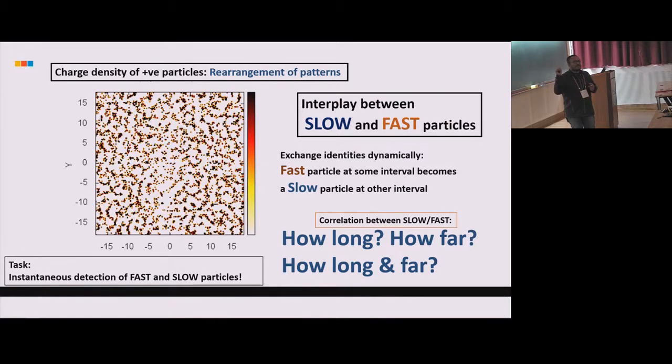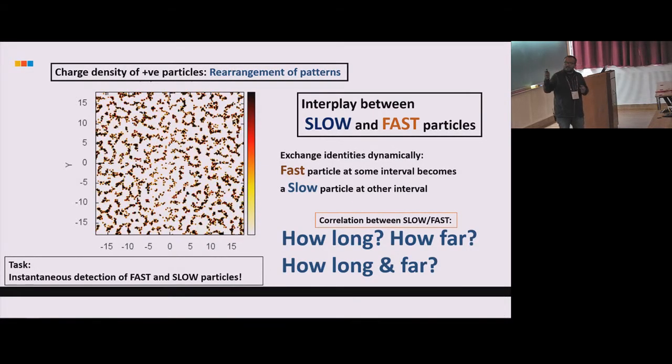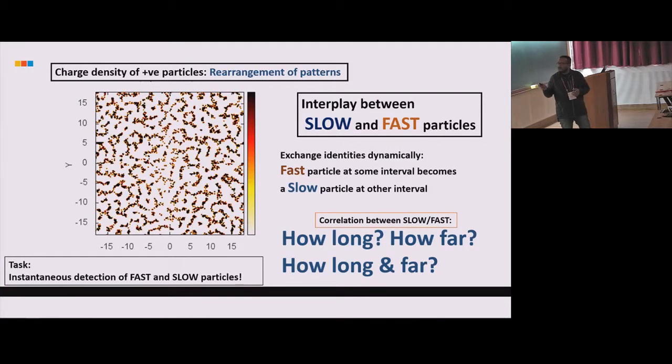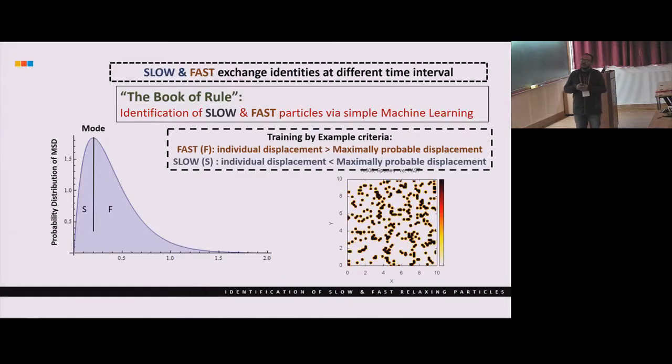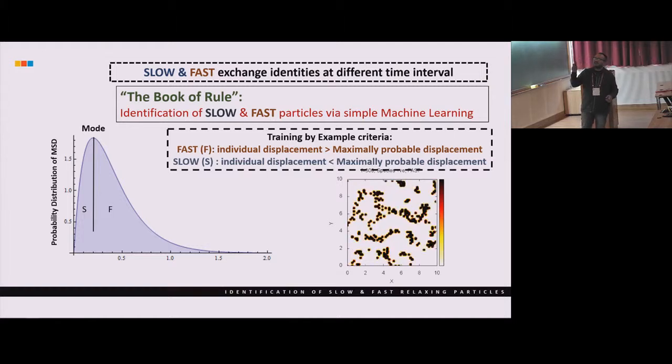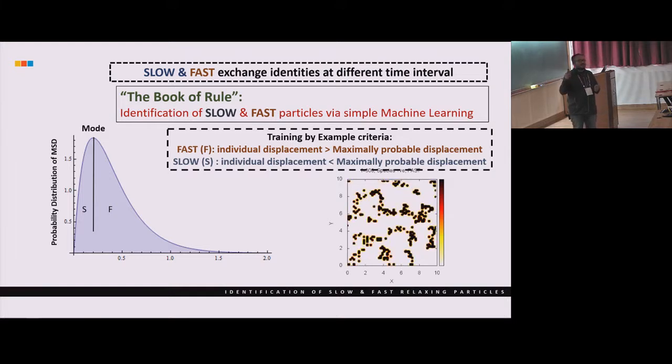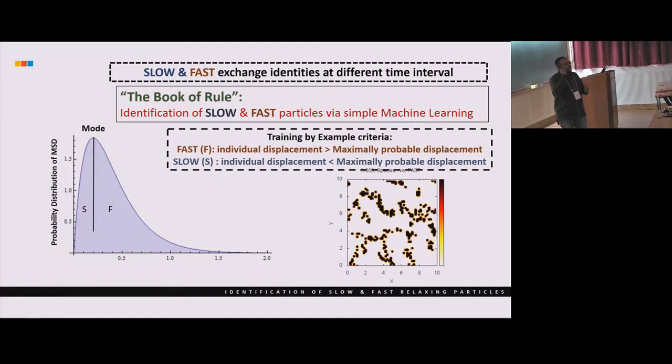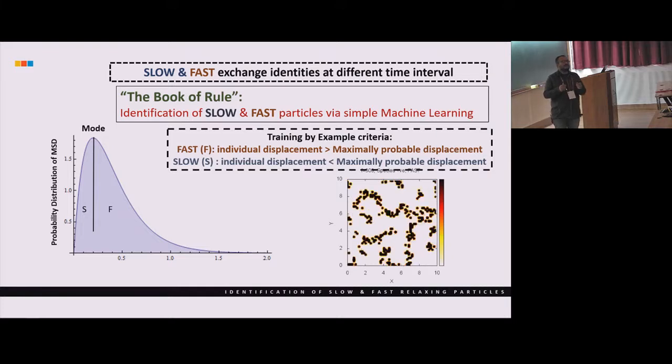To answer these questions, the first very simple task is instantaneous detection of slow and fast particles. This is a very difficult task. However, just because the slow and fast exchange their identities, since I'm not smart enough I have to rely on the machine. We did a very simple machine learning approach. We train the machine so they can identify slow and fast particles.